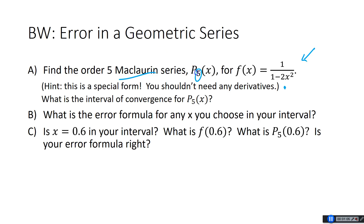We would have to go through five derivatives if we do it that way. But my hint here is that this is a special form — this looks like the a/(1 - r) form, so this is a geometric series. We're going to be able to do this without having to take any derivatives; it'll work out the same way but it's just a lot less work. And we're also asked for the interval of convergence, which should just be |r| < 1.